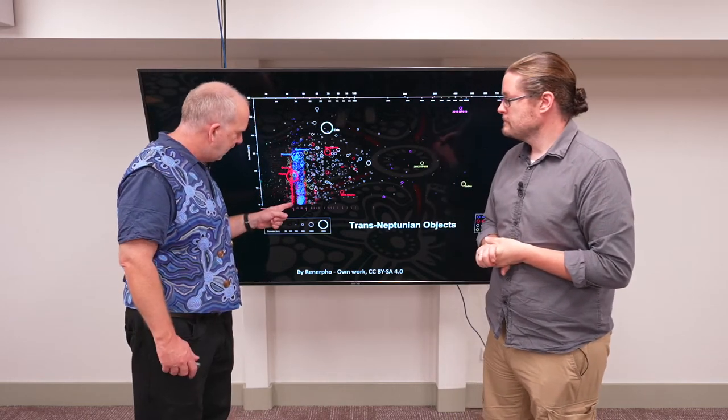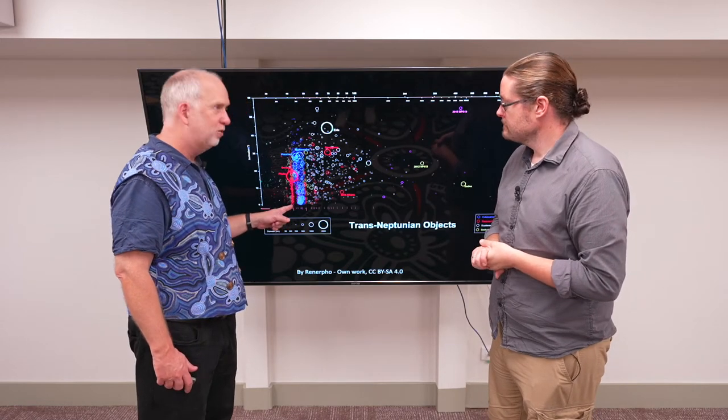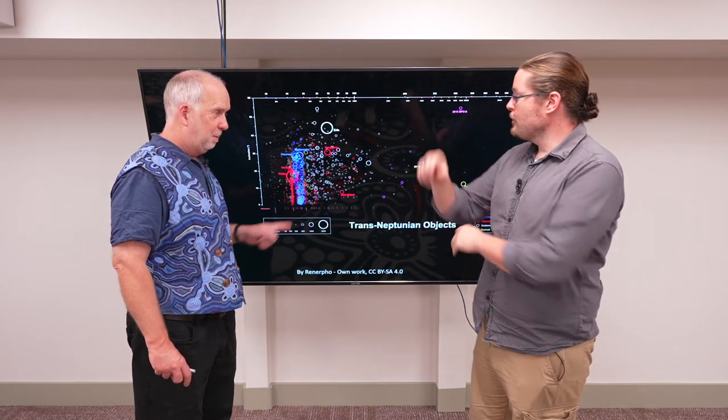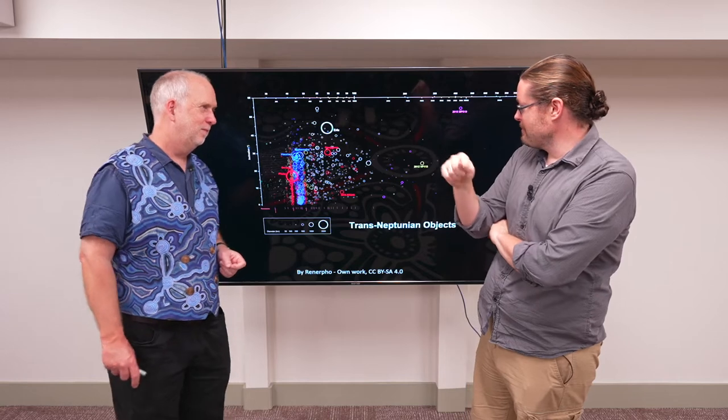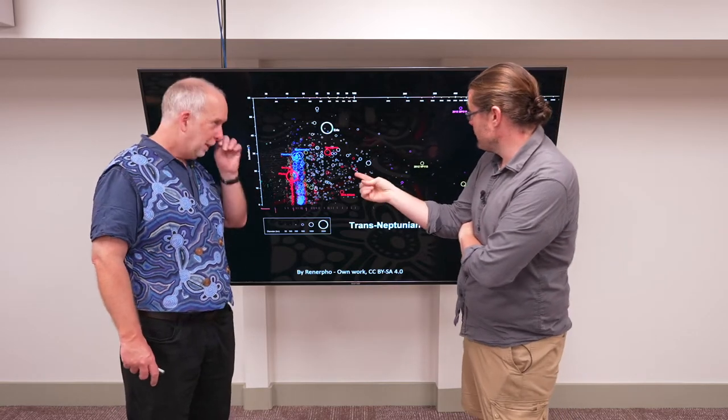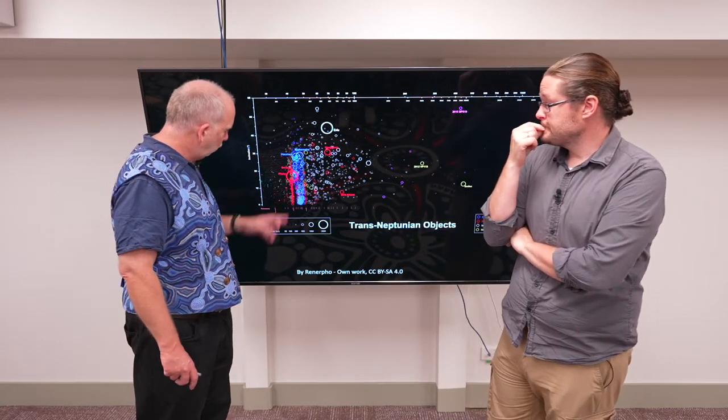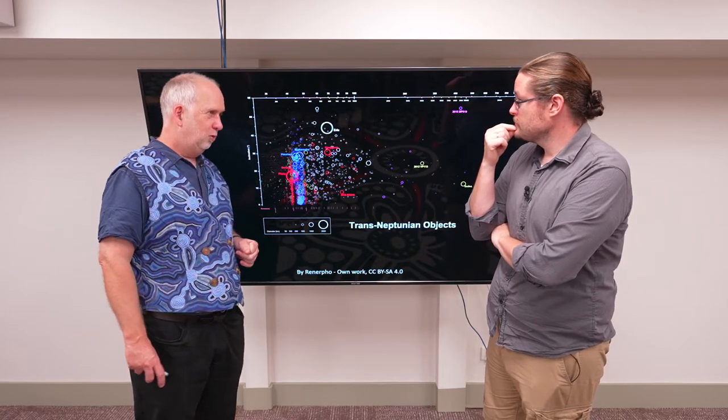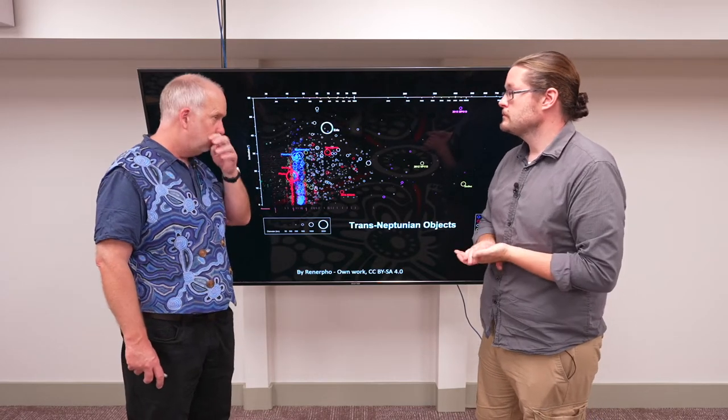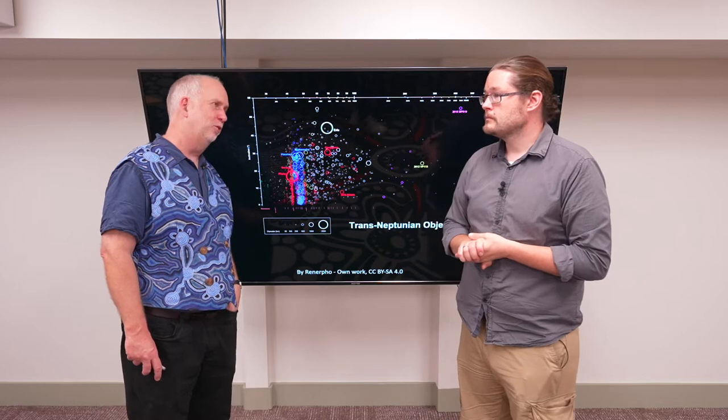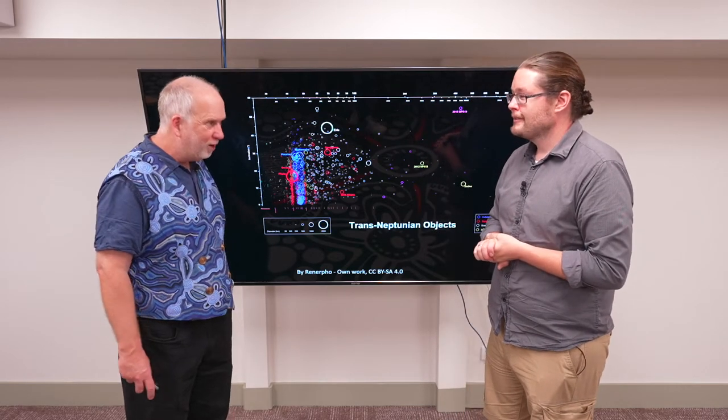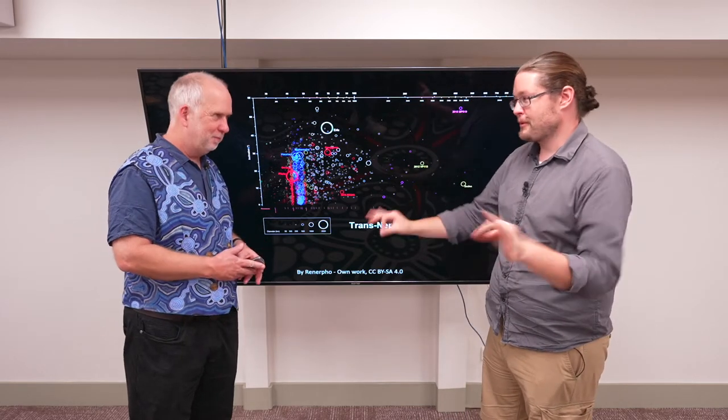Here again, we've got resonances. And now, for example, this is the 3 to 2 resonance with Neptune. So instead of Jupiter being in resonance, it's now Neptune being in resonance. There's a whole bunch of objects, including Pluto, that go round precisely 2 times every 3 times Neptune goes round. Not 3.01, not 2.99. 3.00.